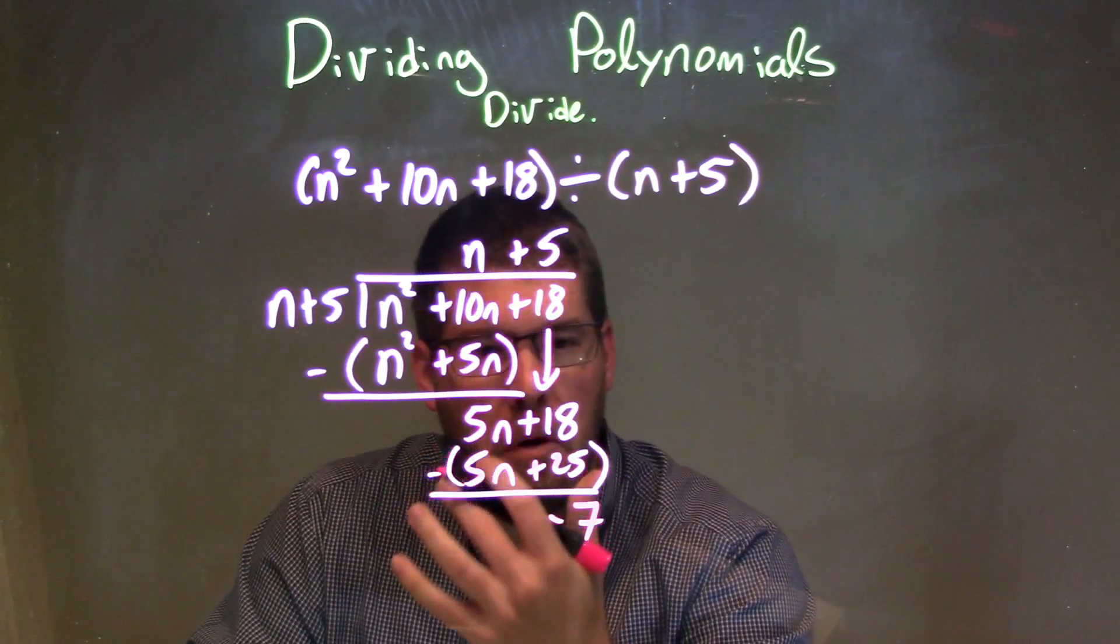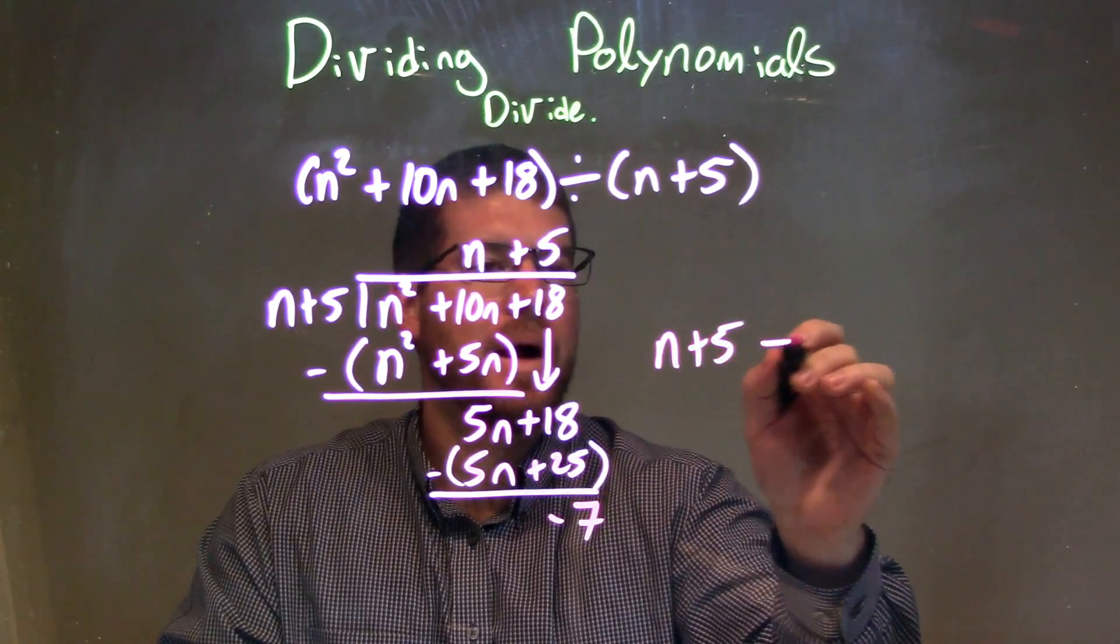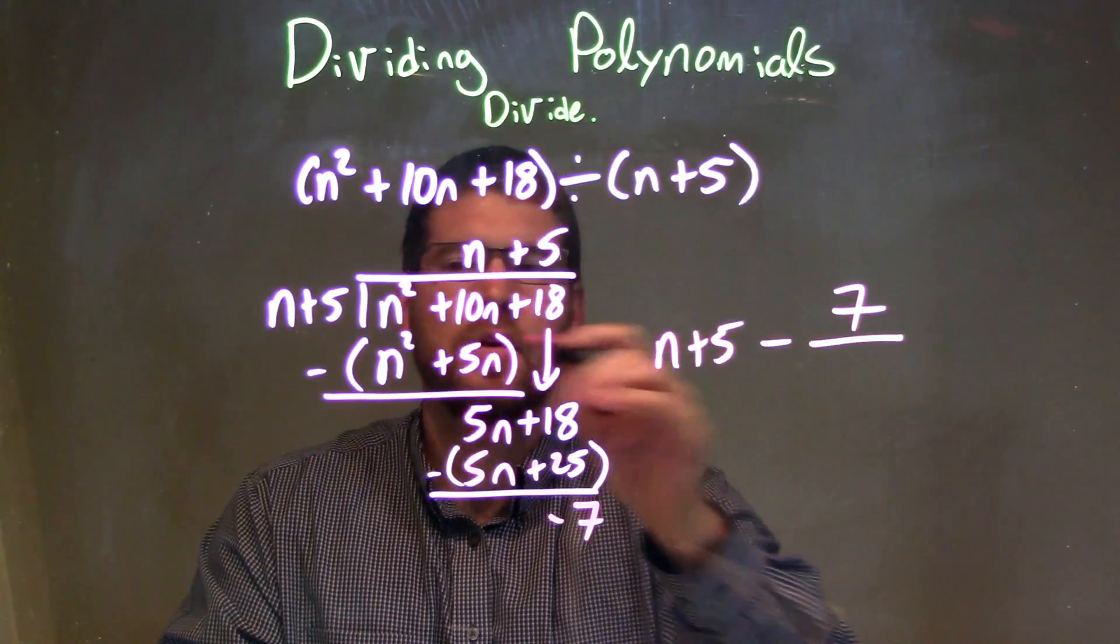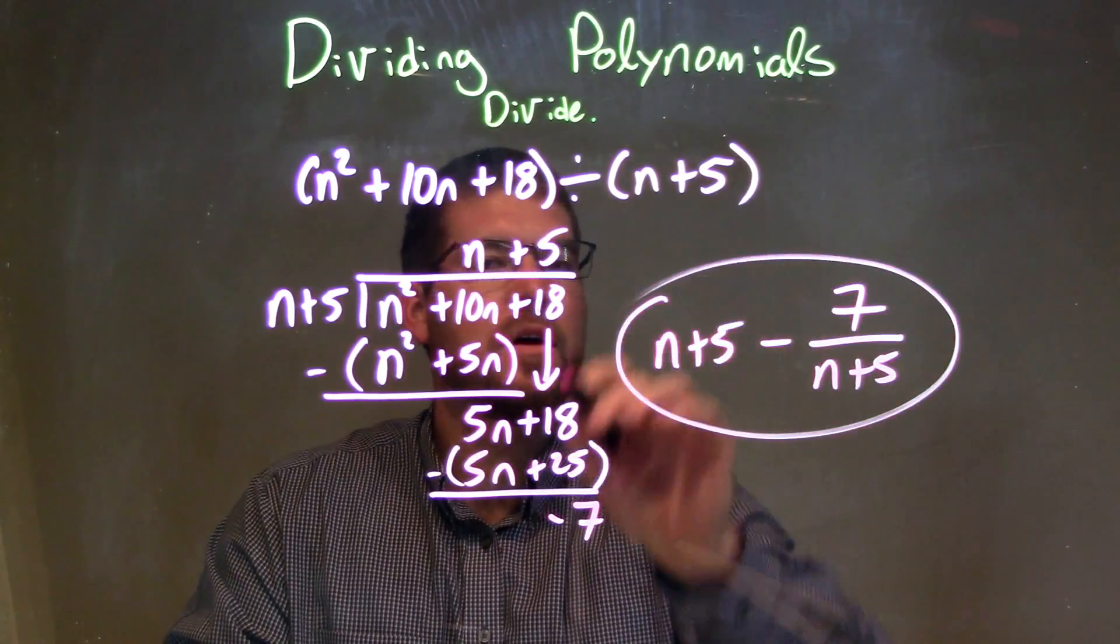And that's our remainder. So at this point, we're almost done. Pretty much done. I'm just going to write our final answer. We have n plus 5 minus 7 over our divisor, which was n plus 5. There we have a final answer.